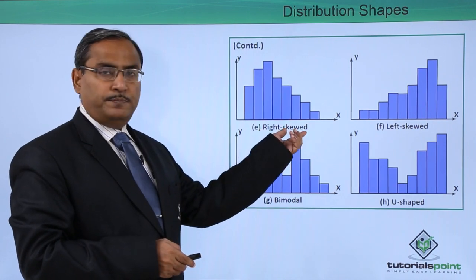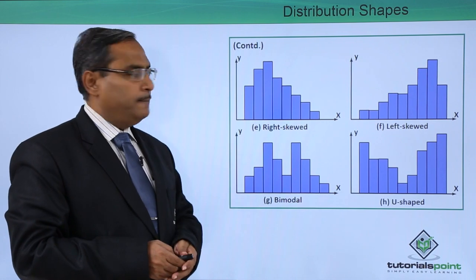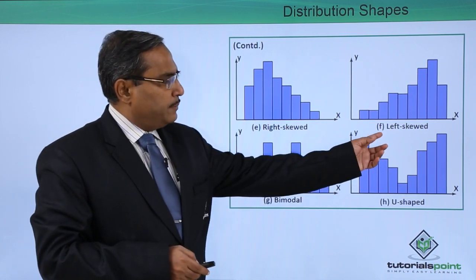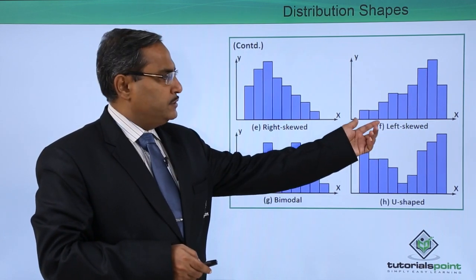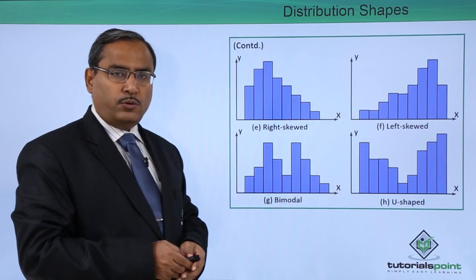This is the right skewed—this sort of distribution shape will be called right skewed. This is the left skewed, where the frequency is less in the first few class intervals and then the frequency is growing.